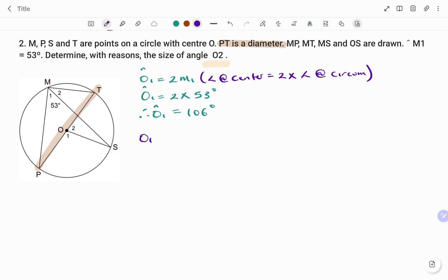what it means is angle O1 and O2 are on the same straight line. So, therefore, O1 plus O2 angles, sum of angles on a straight line, that's 180 degrees. Therefore, I have O1, that's 106 degrees, plus O2 equals 180. Therefore, angle O2 equals 180 degrees minus 106 degrees. Therefore, the angle O2 equals 74 degrees.